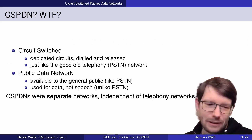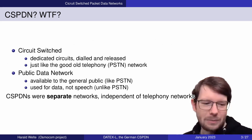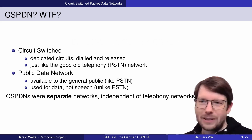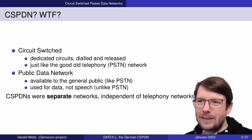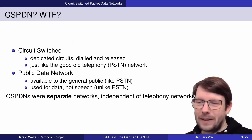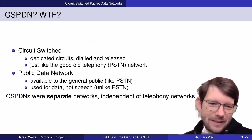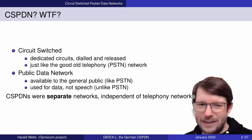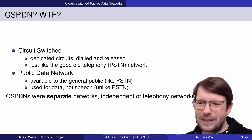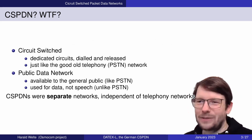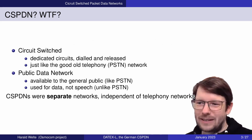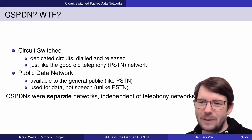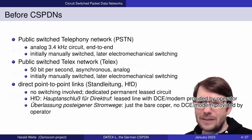Even if the same cable could be physically routed to a telephony switch or to a CSPDN switch, that was something you did once, and then it was used and permanently attached for years or decades to one type of network. There's no connection between those networks — cables can be used either this way or the other way, but that's all.